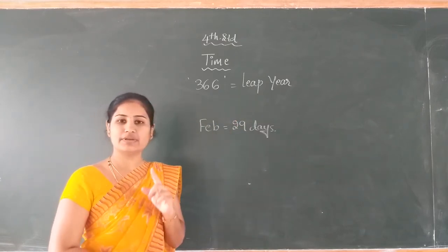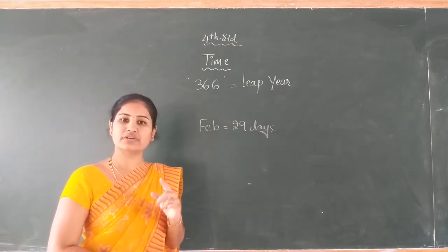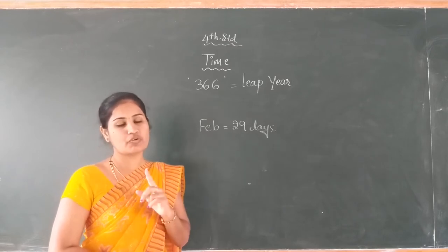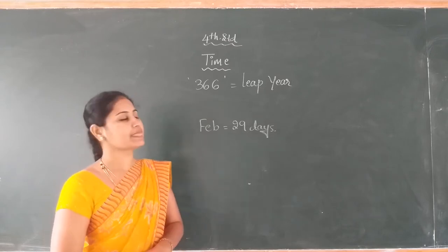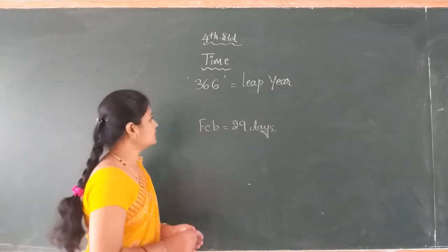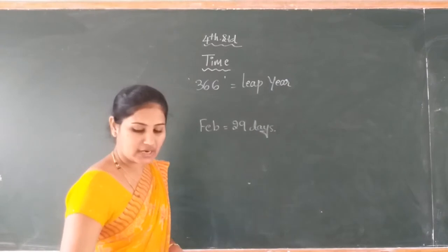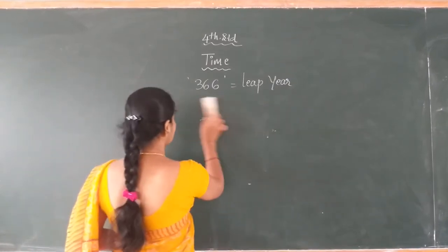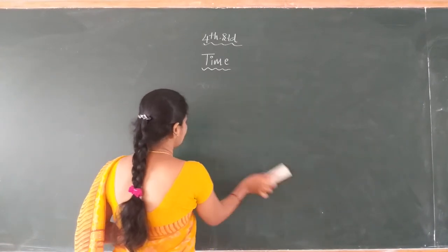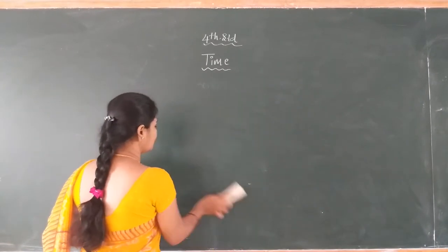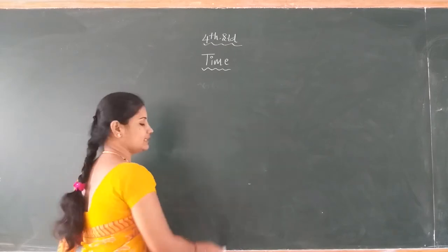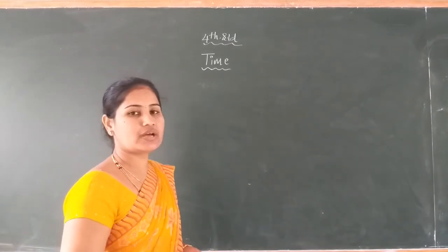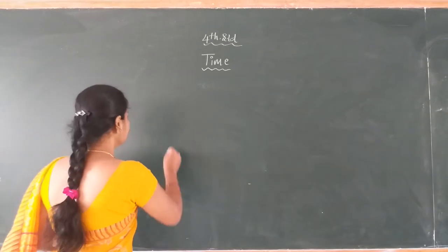Dear students, the leap year comes every 4 years once. So, dear student, how to identify the leap year? I give one of the calculations for finding the leap year. Dear student, I will show with an example.